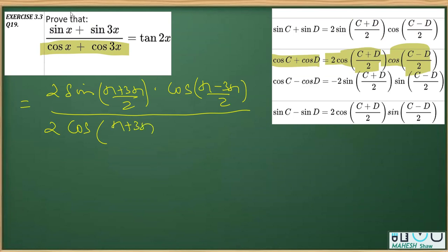So you can check from here that this gets cancelled, cos x minus 3x by 2 and sine x minus 3x by 2. Even this gets cancelled. So what we are left is sine x plus 3x divided by cos x plus 3x.